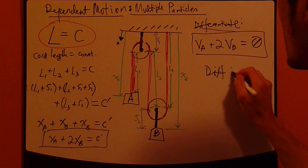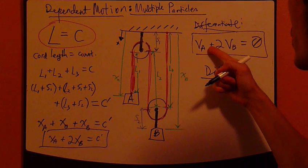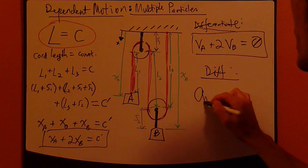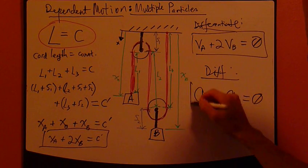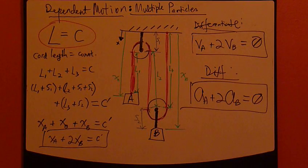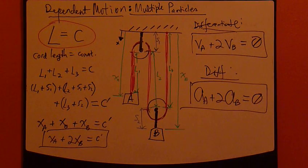Now, differentiate again. Differentiate this equation again. What do we get? AA plus 2AB. Right-hand side, again, constant. That's all. So, simple as that.